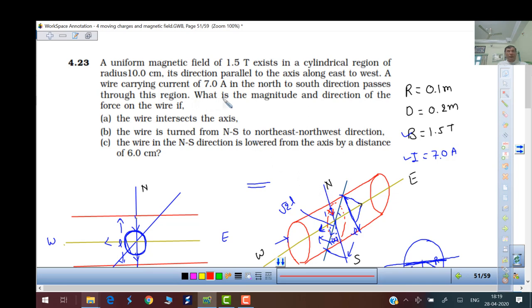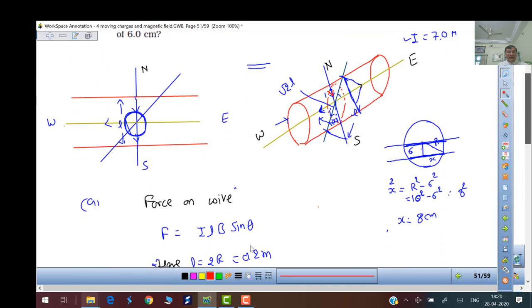What is the magnitude and direction of the force on the wire? This is the direction of the magnetic field, east-west direction, and this is the wire. So this is at an angle of 90 degrees. The formula of force on the wire is I L cross B, means I L B sin theta. Angle is 90, so I L B. What is the formula? I L B. What is the length? Effective length?